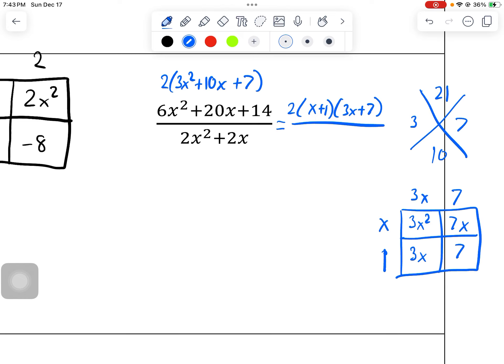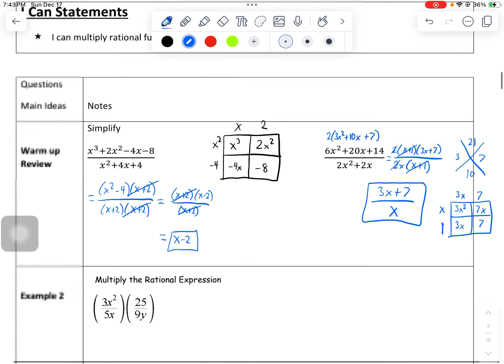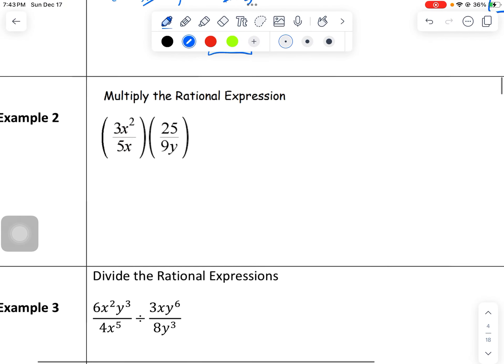Over the bottom, I can factor out a 2x, and then I would have x plus 1. Be really careful. I know it's weird, but when you factor 2x out of itself, you're still left with 1. Any number divided by itself is 1. So the 2s are going to go away, x plus 1s are going to go away, and we're left with 3x plus 7 over x.